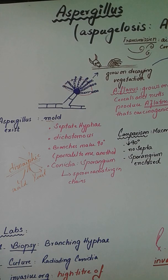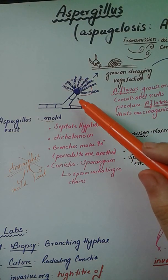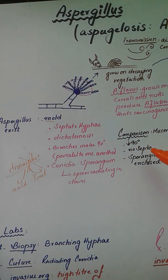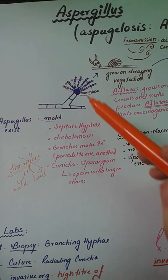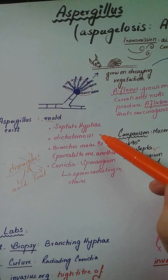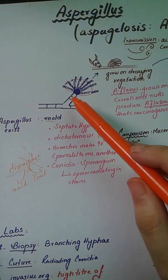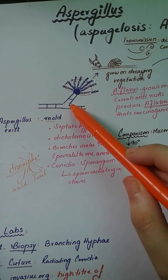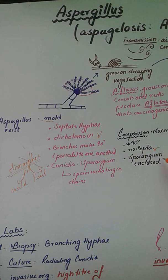Aspergillus has septa, which help differentiate it from Mucor, which does not have any septa. Another feature is that it is trichomatous, meaning it forms V-shaped branches. These branches make a specific angle and are parallel to each other, whereas Mucor is not.